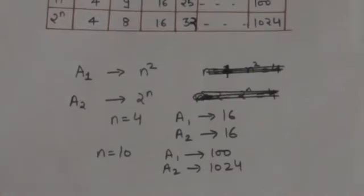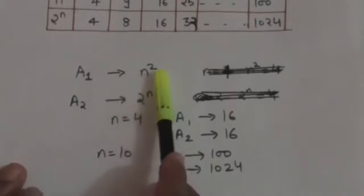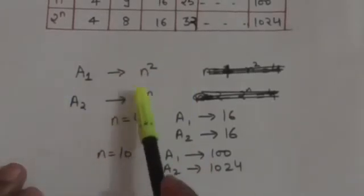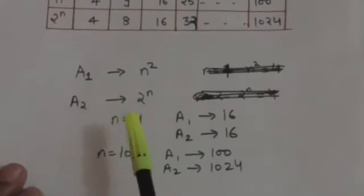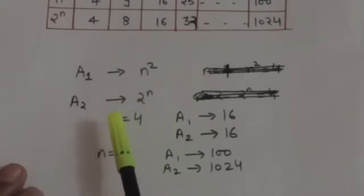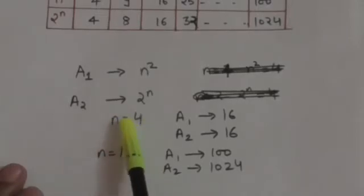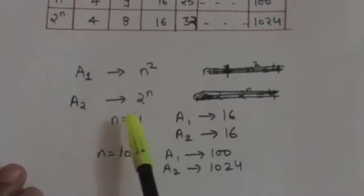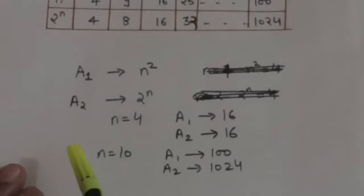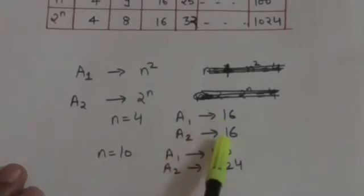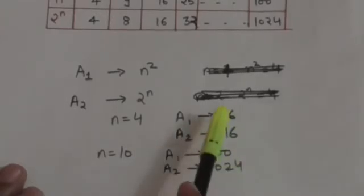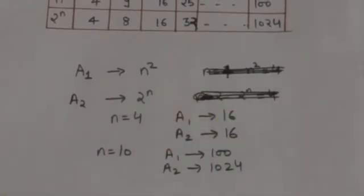Now suppose there are two algorithms A1 and A2 that both solve the same problem. Algorithm A1 performs n² basic operations and algorithm A2 performs 2 raised to power n basic operations to solve the problem, where n is the input size. When the input size is 4 — that is, when n equals 4 and there are only 4 input elements — both algorithms have to perform 16 basic operations to solve the problem.